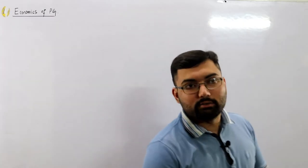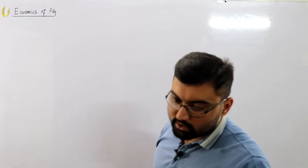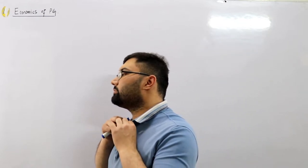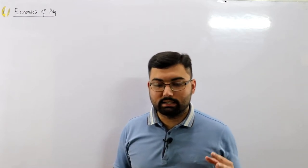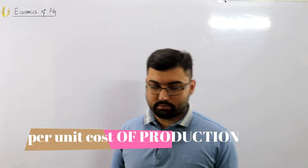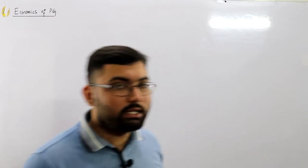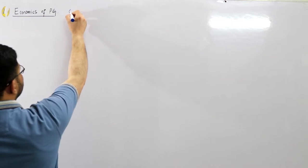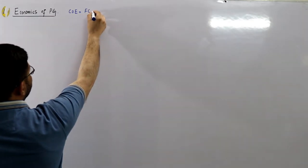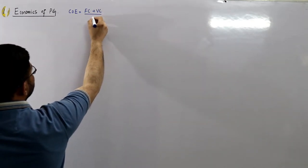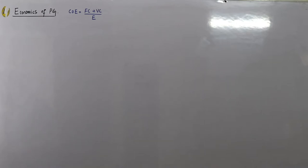Hello everyone, Assalamu Alaikum, welcome back to the channel. Today we do a certain number of examples on the economics of power generation. We've seen a basic introductory video previously on the determination of the per unit cost of electrical energy. The total cost per unit would be the fixed charges plus the variable charges divided by the total number of units generated.